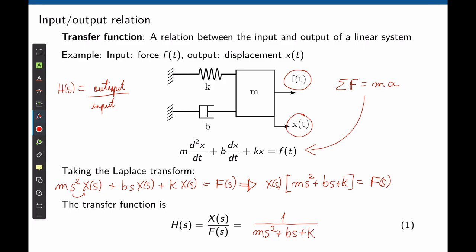To find the displacement when a force is applied in the temporal domain, we define what F(s) is — a step input, an impulse, a sinusoidal waveform, and so on. Then move F(s) to the right side, and find the inverse Laplace transform of X(s), that is x(t), the output of the system for that given input.